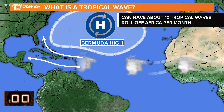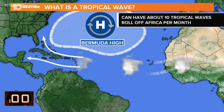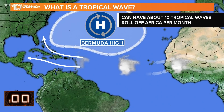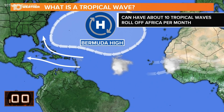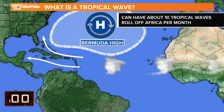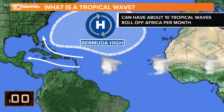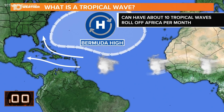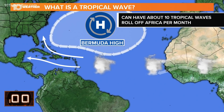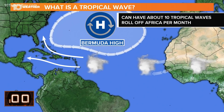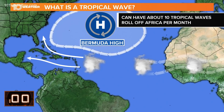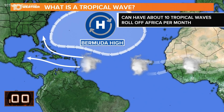As these clusters of thunderstorms travel along with the easterly jet, they push out over the Atlantic Ocean. Those waves can move across the ocean, pushed along by the Bermuda high, and eventually you get tropical storms and hurricanes coming from those waves off the coast of Africa.